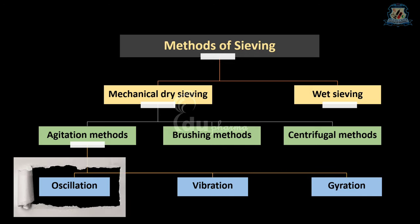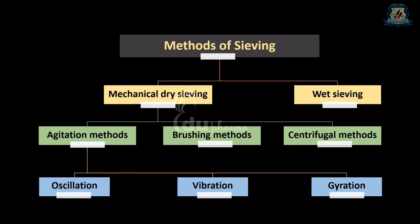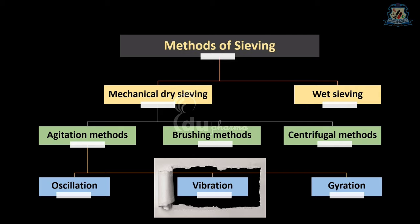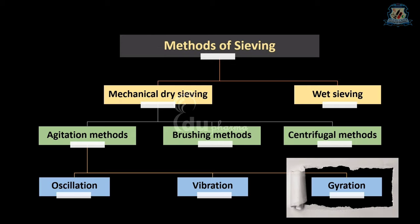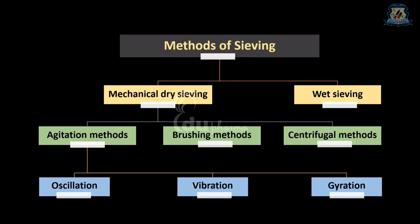Oscillation means the sieve is mounted in a frame that oscillates back and forth. In the case of vibration, the mesh is vibrated at high speed, often by means of an electric device using 50 Hz alternation of an alternating electric current. The gyration method uses a system in which the sieve is on a rubber mounting and connected to an electric flywheel, and the sieving is based on a circular motion of the machine.